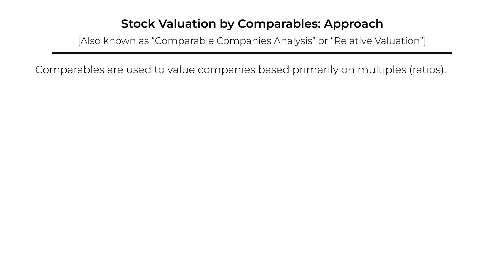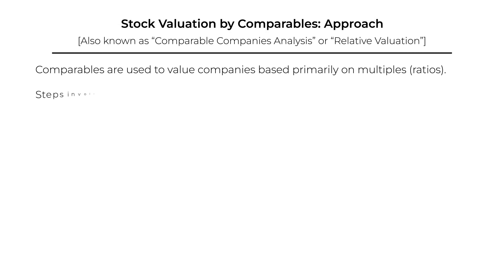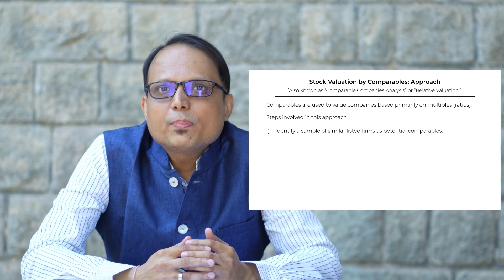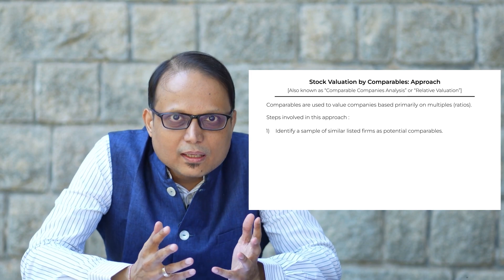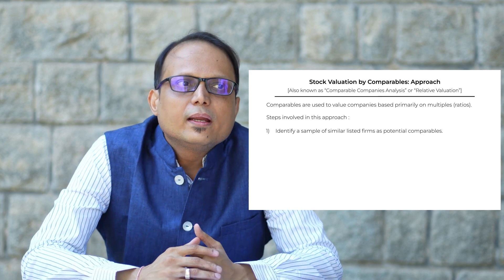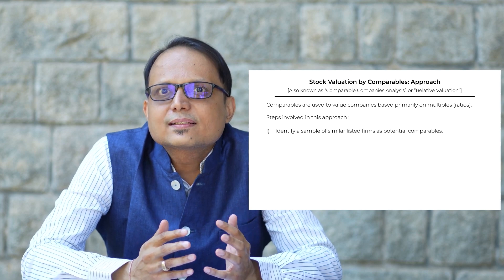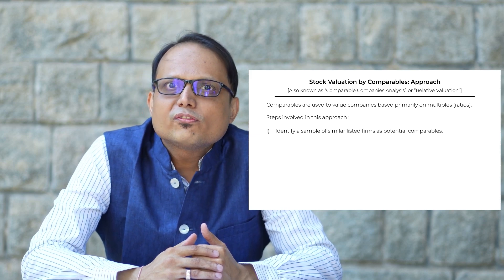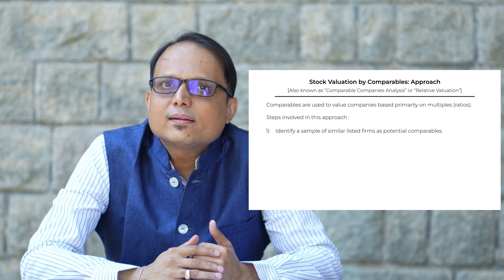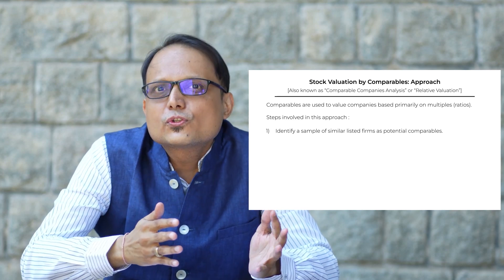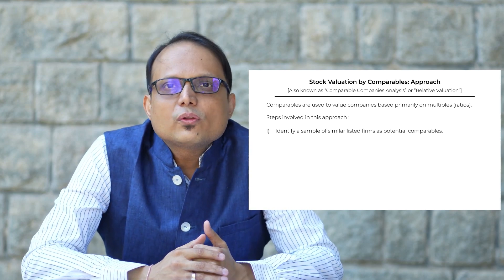Let us begin by jotting down the steps involved in this approach. The first step is to identify comparables — firms that are comparable or similar to the firm whose stock price we want to find out. Typically we refer to firms in the same industry as comparables, and we might impose additional constraints such as size similarity.